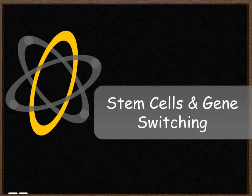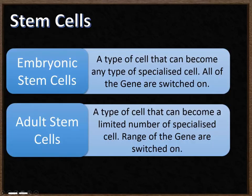Stem cells and gene switching. There are two types of stem cells. The first type, embryonic stem cells, are a type of cell that can become any type of specialized cell. All of the genes inside the cell are switched on. However, these are only found in embryos.